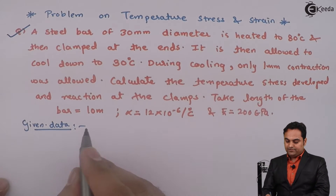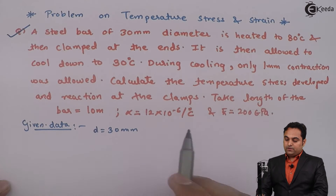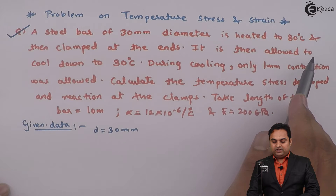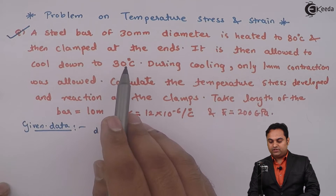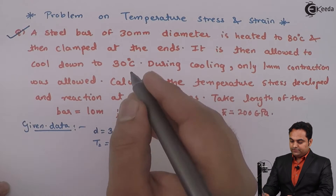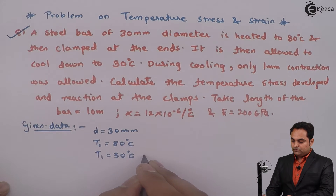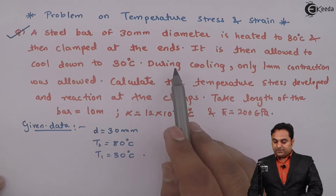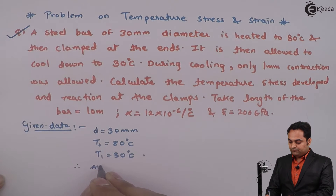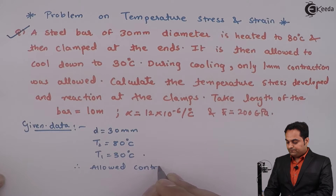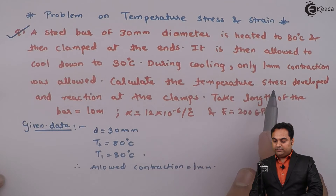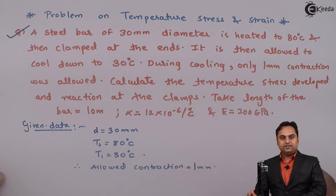A steel bar of 30 mm diameter is heated to 80 degree Celsius and then clamped at the ends. It is then allowed to cool down to 30 degree Celsius. So 80 degree Celsius I will keep as temperature T2, and 30 degree Celsius as T1. It is said that during cooling only 1 mm contraction was allowed. We need to calculate the temperature stress developed and the reaction at the clamps.